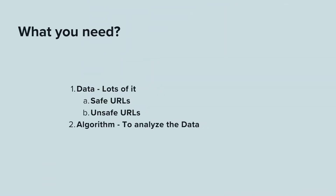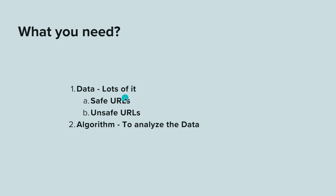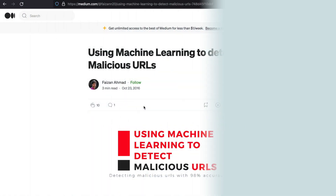So what do you need? First of all, you need data and lots of it. That data would comprise two sets — the first containing safe URLs and the second containing unsafe URLs. The second thing is that you need an algorithm to analyze the data.